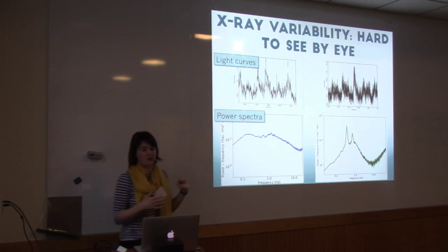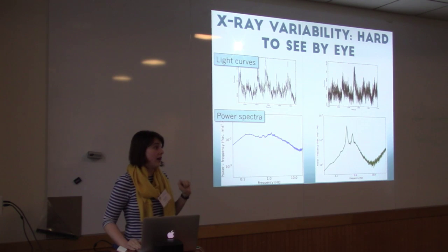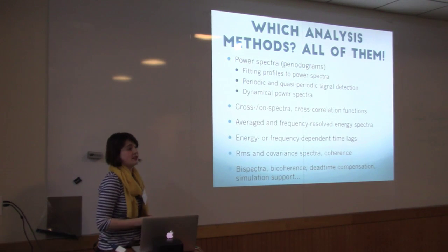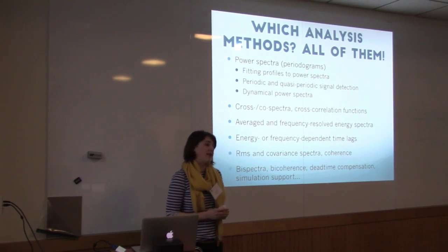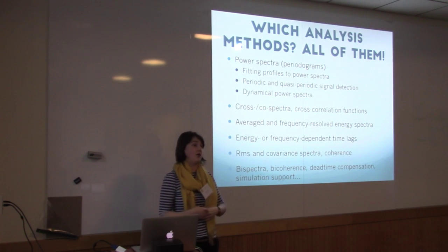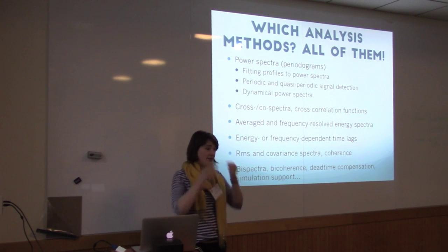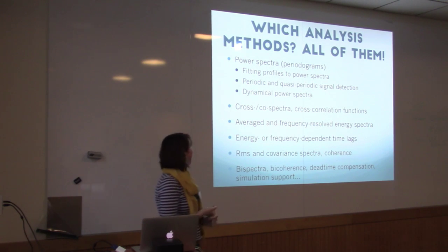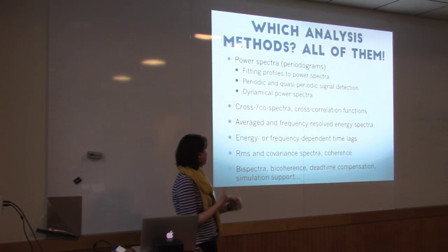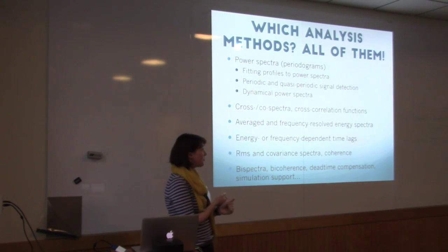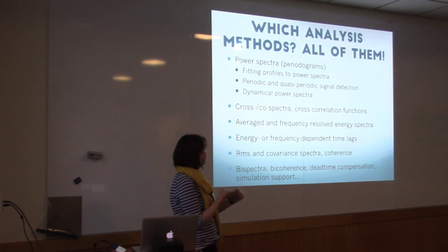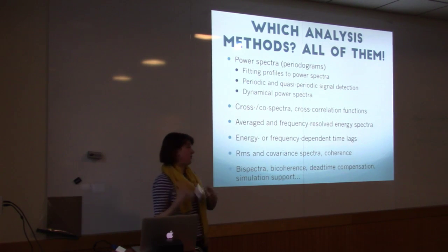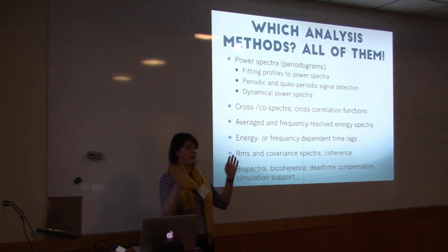We had a workshop on spectral timing of X-ray binaries and AGN in February at the Lorentz Center in the Netherlands, and we asked which analysis methods people want available for new missions and archival data. Basically people said all of them: power spectra, periodograms, fitting profiles, signal detection, dynamical power spectra, cross and co-spectra, cross-correlation functions, average and frequency-resolved energy spectra, energy or frequency-dependent time lags, RMS and covariance spectra, coherence, bispectra, biscoherence, dead time correction — they want everything.